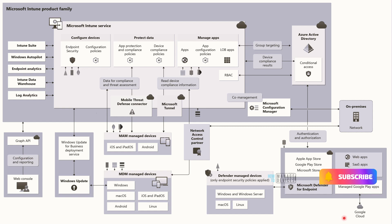On the left side, let's start with patching. Windows Update for Business deployment service is the component that actually does patching on managed devices. The policies are configured and delivered through Intune service, and once the policies are in the devices, they interact with the deployment service via Windows Update, handling all the patching for Windows devices. There is no connectivity mentioned in the diagram for macOS, iOS, or iPadOS update services.